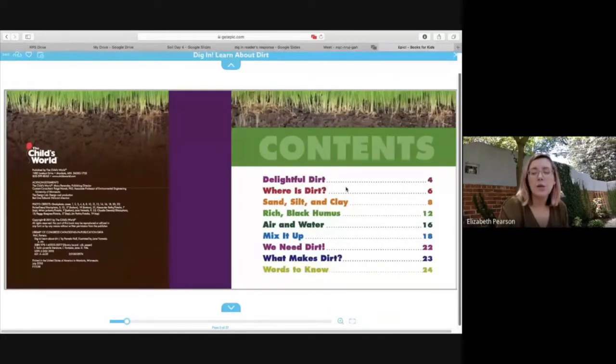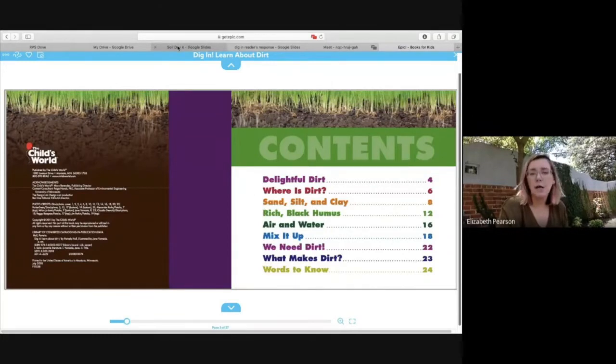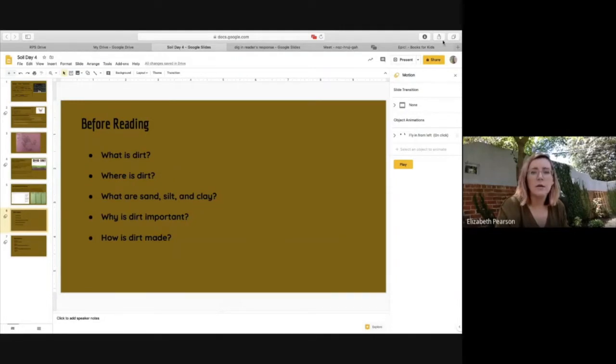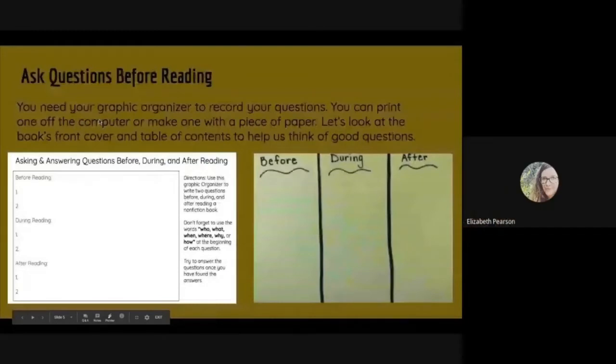And write where is dirt on your graphic organizer. That would be a really good idea. And then chapter three is called Sand, Silt, and Clay. And that's going to be on page eight. So let's look at some of the questions I wrote. And you can compare them to some of the questions you wrote. You can see if you have some of the same questions as me. Okay. So if you need a minute to write some more questions on your graphic organizer, I want you to have at least two. So if you want to pause the video to come up with one or two questions, you can. And then you can push play after you have your questions. And then we'll compare to see if you have any of the questions that I have.